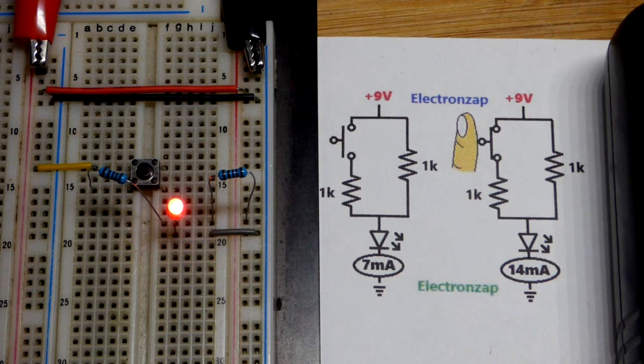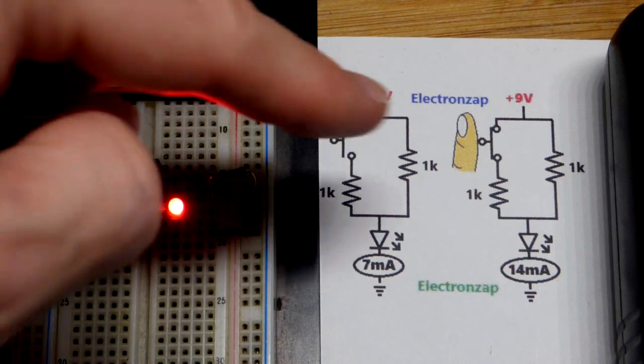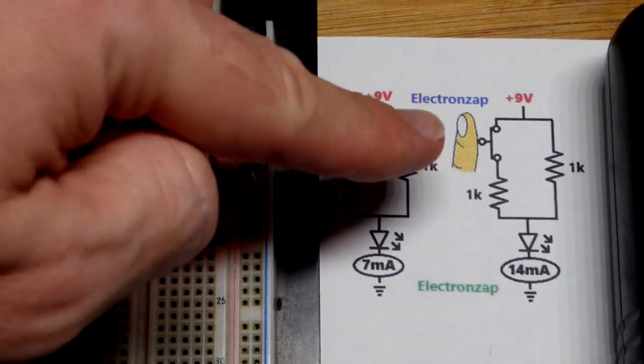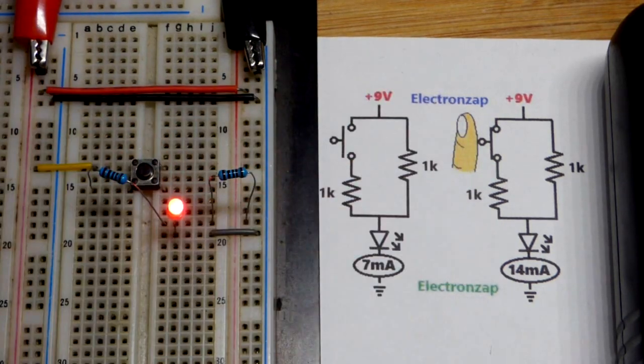In a practical circuit, you probably won't use a push button switch for something like this. You might have a sensor or something that turns on or off a transistor switch or something else, but the principle would be the same. This is the simple version.